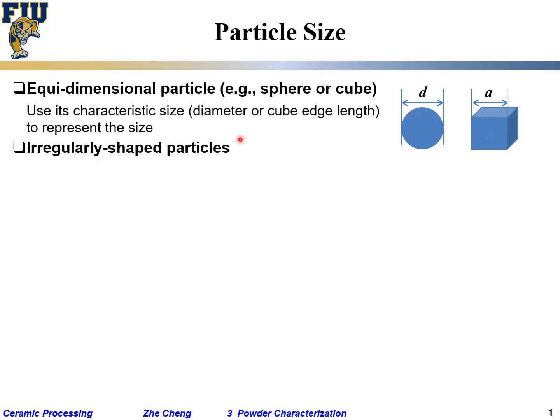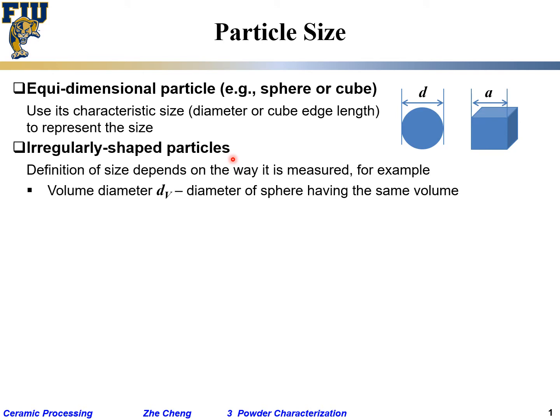But for irregular-shaped particles, how do you define size? It becomes tricky. Depending on the way it's measured, we can define volume diameter, which is the diameter of a sphere that has the equivalent volume.